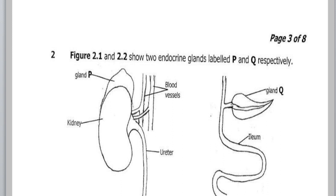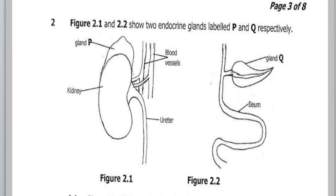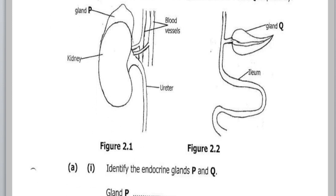We're done with question one and we proceed to question two. Figures 2.1 and 2.2 show two endocrine glands labeled P and Q respectively. This question comes from the topic called the endocrine system, so at your free time you should look at some notes on this topic.